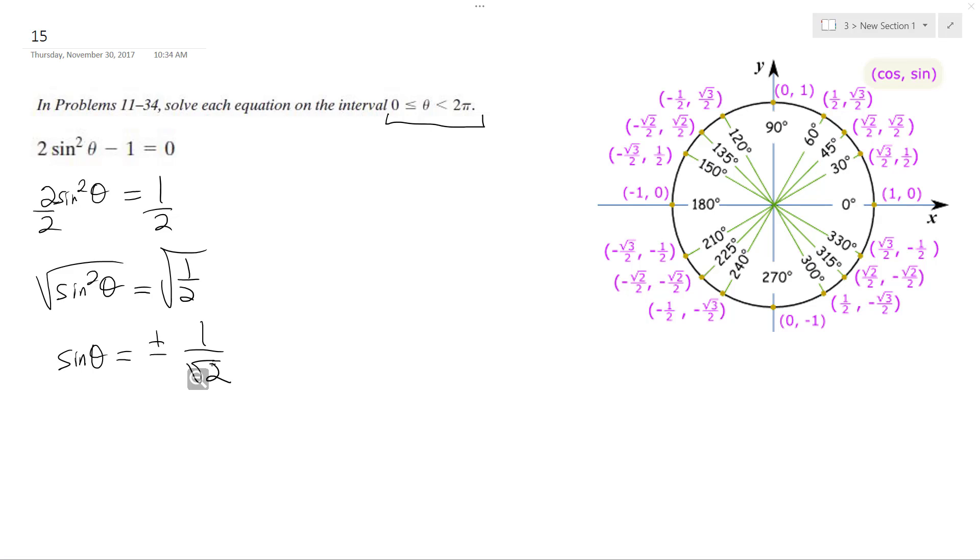All right, so what we do here is, this is basically a 45 degree angle pi over 4, so 1, 1, root 2. But this is plus or minus root 2, so it's opposite over adjacent, so this is still 1.